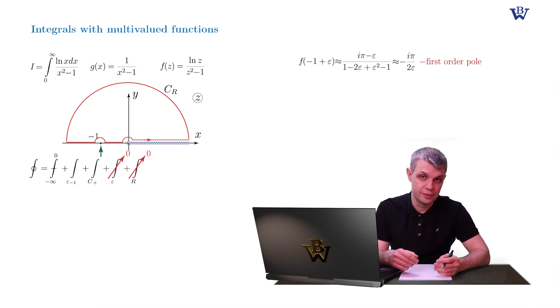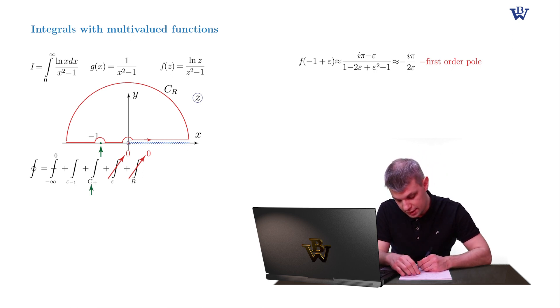So our closed contour integral is now reduced to the combination of three terms. The first term is simply c plus. The second term is the principal value integral from minus infinity to zero. And the third term is the upper semicircular integral around point negative 1. And at this point we make a short break.